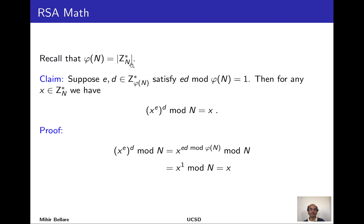Let N be an integer and consider the group ZN*. In our study of discrete log, N was prime, but in RSA it will be composite. Recall that φ(N) is the order of this group. Since φ(N) is itself an integer, we can look at the group Z*_{φ(N)}—integers mod φ(N) that are relatively prime to φ(N). Pick a number e in that group; since it is a group there is an inverse d such that e·d ≡ 1 mod φ(N). With those fixed, return to ZN* and take an arbitrary point x; raise x to the power e, then raise that result to the power d, all modulo N.